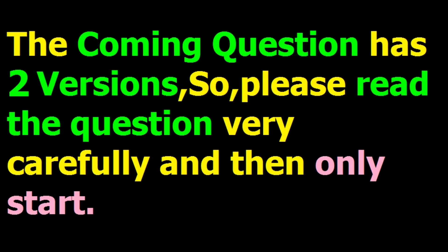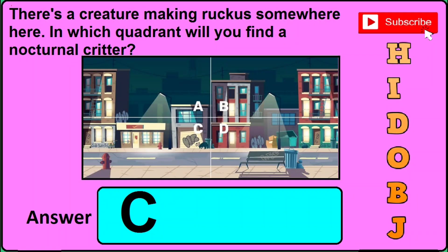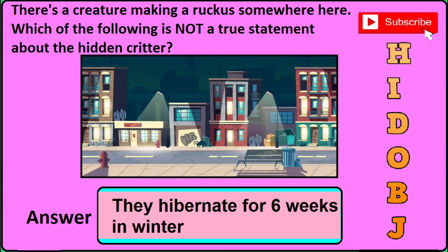This question number 18 has got two different versions or types, so you need to read the question carefully and look at the answer box. In version one, it is asked: there is a creature making a raucous somewhere here — in which quadrant would you find the nocturnal creature? The correct answer will be C, so just click C. In version two, it is asked: which of the following is not a true statement about the hidden creature? The correct answer will be: they hibernate for six weeks in winter.